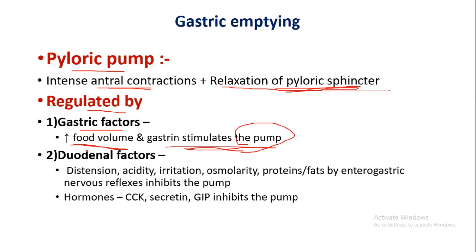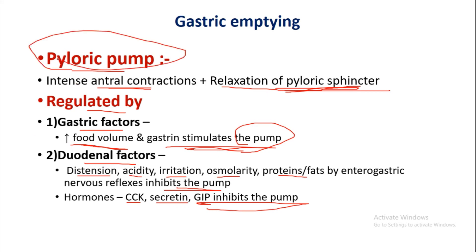Duodenal factors — distension, acidity, irritation, osmolarity, proteins, and fats — inhibit the pyloric pump via enterogastric nervous reflexes. Hormones such as cholecystokinin, secretin, and gastric inhibitory peptide also inhibit the pump. These are the factors that regulate the pyloric pump during the phase of gastric emptying.